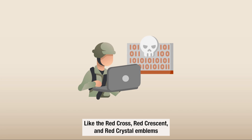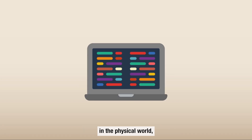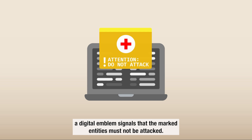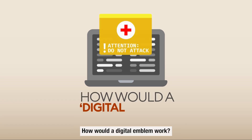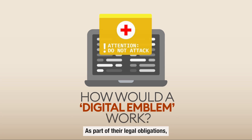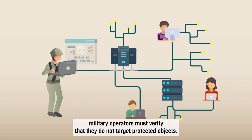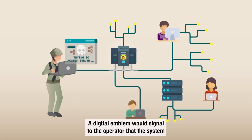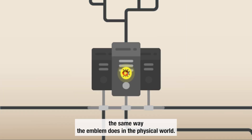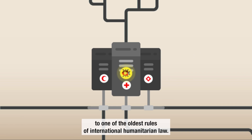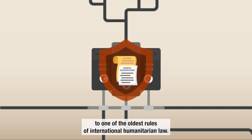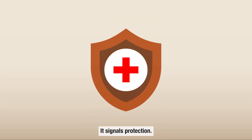Like the Red Cross, Red Crescent, and Red Crystal emblems in the physical world, a digital emblem signals that the marked entities must not be attacked. As part of their legal obligations, military operators must verify that they do not target protected objects. A digital emblem would signal to the operator that the system they are about to attack is actually protected, the same way the emblem does in the physical world. So a digital emblem gives a digital expression to one of the oldest rules of international humanitarian law: it signals protection.